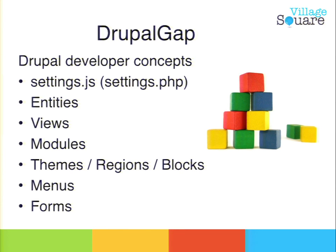Drupal Gap does a lot of work to simplify our lives. It utilizes concepts that Drupal developers are already familiar with, and instead of writing PHP to do all this, we're just going to be using JavaScript. Out of the box, just as we're all familiar with our Drupal site — we grab a copy of default settings.php and rename it settings.php — in this environment it's very similar. We grab a copy of default settings.js, rename it settings.js, and the only thing we need to do to get started is give the URL to our Drupal website in that settings file.